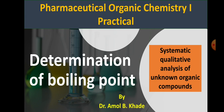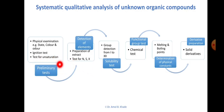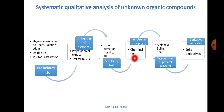Welcome back to this video session of pharmaceutical organic chemistry practicals. In today's session we will be discussing the determination of boiling point of a given organic sample. This video is part of the systematic qualitative analysis of unknown organic compounds. In earlier sessions we discussed various preliminary tests, finding auxiliary elements, solubility tests, categorizing the compound into a group, and performing functional group tests.